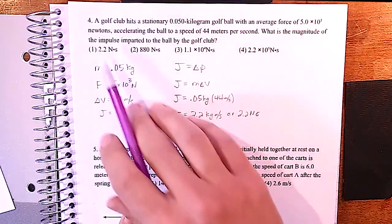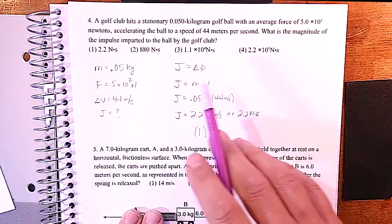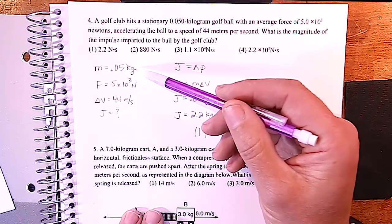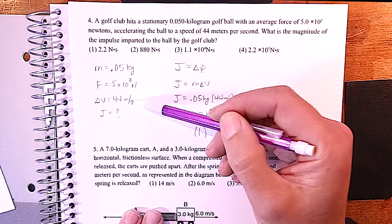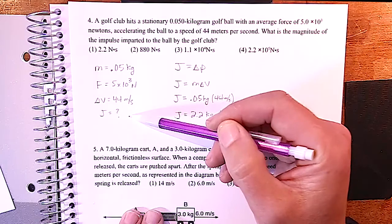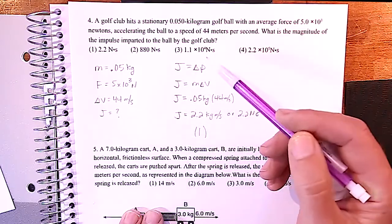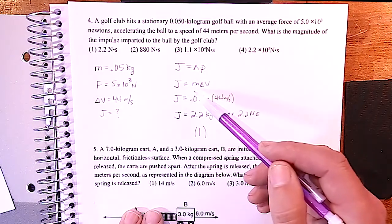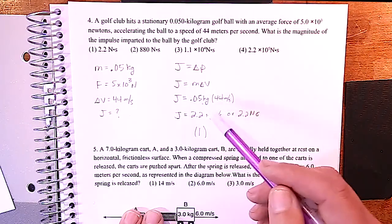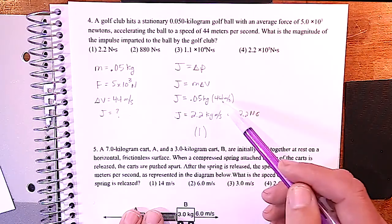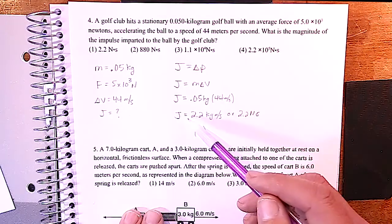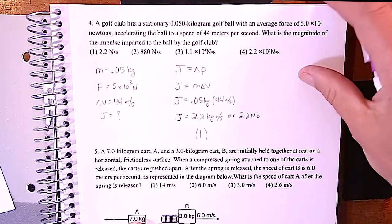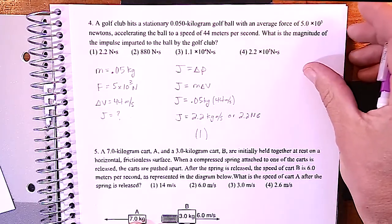This one is similar to those types of problems where they give us a ton of information. We write down all our knowns and unknowns: mass, force, and change in velocity. They're asking us for the impulse. Impulse equals change in momentum, so we use m·Δv to find j. The result is 2.2 kilogram meters per second.